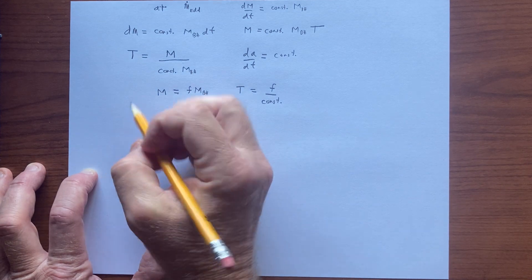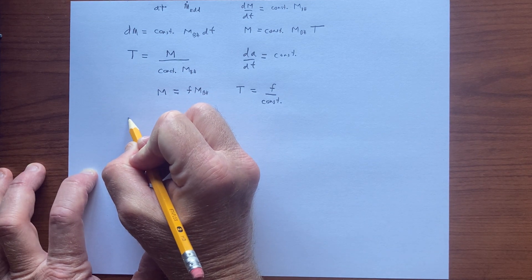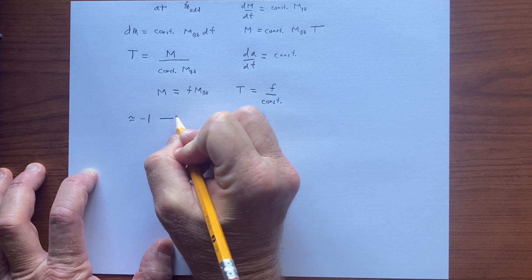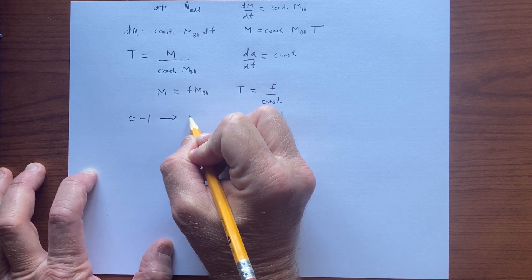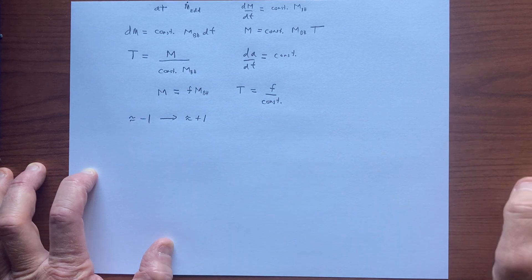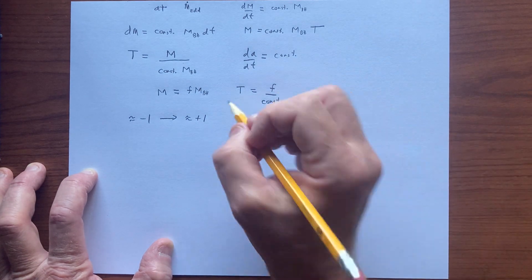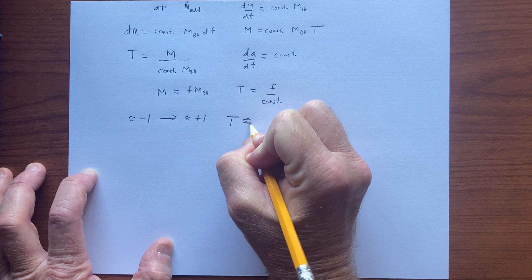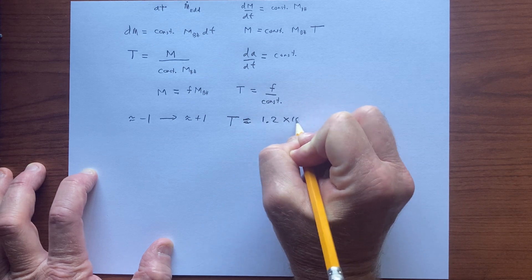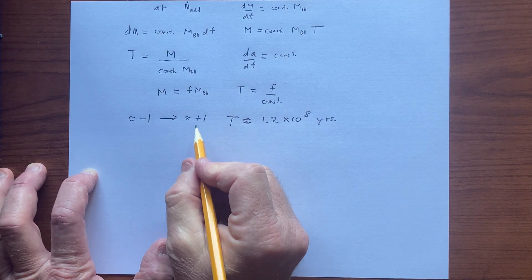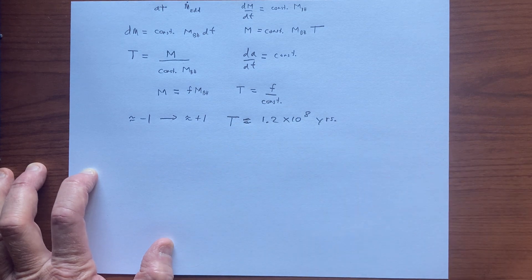Let's think of a spin from close to about -1, counter-rotation, all the way to close to about +1 — you can't actually get to 1 for the spin. We can do this calculation and figure out what that timescale is. If we're reasonably careful, we get 1.2×10⁸ years to spin the black hole down and then all the way back up again at the Eddington rate.